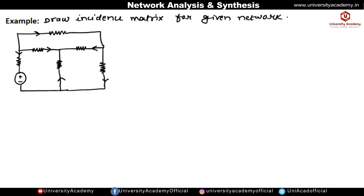Now let us understand the incidence matrix with an example. We have to draw the incidence matrix for a given network. The directions are already marked, so this will be an oriented and directed graph. The nodes present are node A, node B, node C, and node D — four nodes in total. The branches are labeled branch one through branch six, so there are six branches.